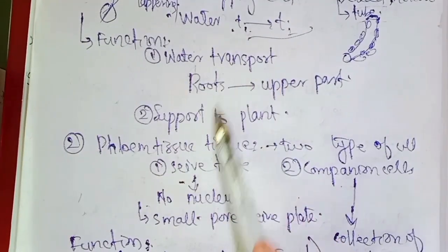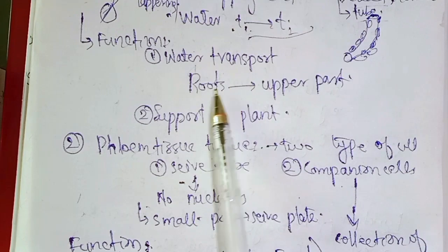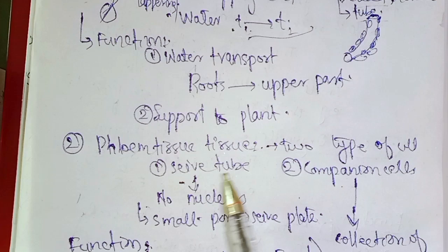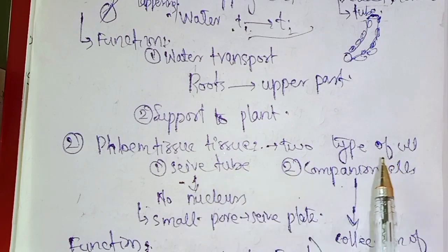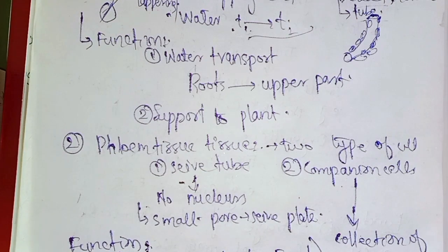The function of xylem is to transport water and provide support to the plant from the roots to the upper parts. The phloem tissue has two types of cells — sieve tube cells, which have no nucleus, and companion cells. The function of phloem is to transport food.